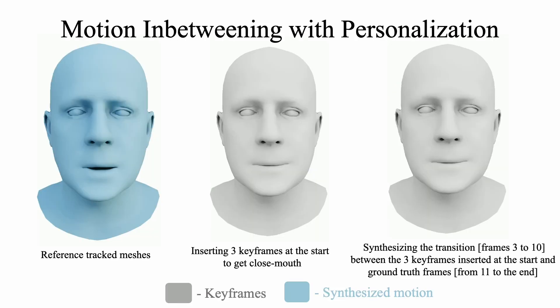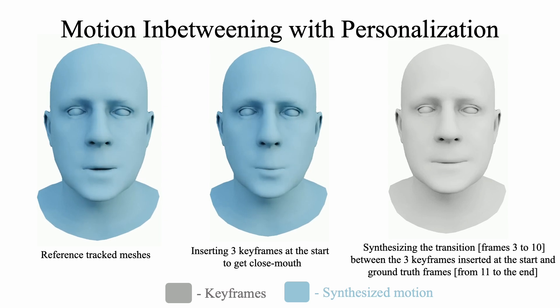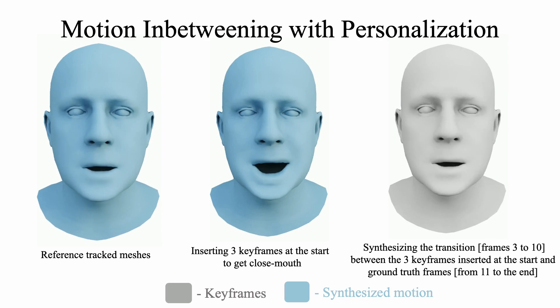For motion editing, we insert keyframes which the model has to match during synthesis. We insert closed-mouth keyframes at the start to generate a new sequence starting with a closed mouth. We additionally insert the ground-truth keyframes from frame 10 to the end of the sequence, and only generate the transition from the closed-mouth keyframes to the ground truth.